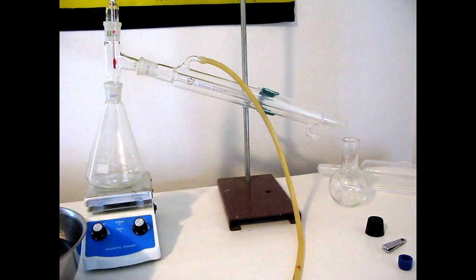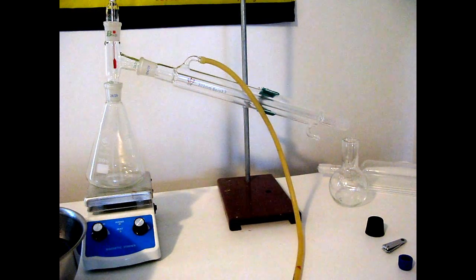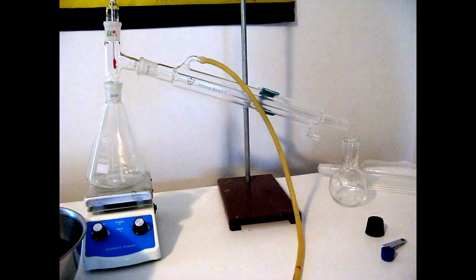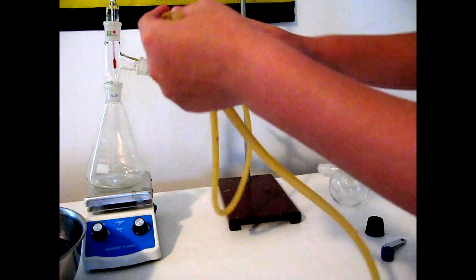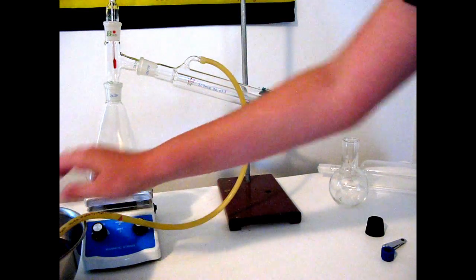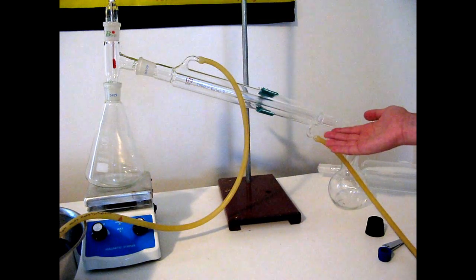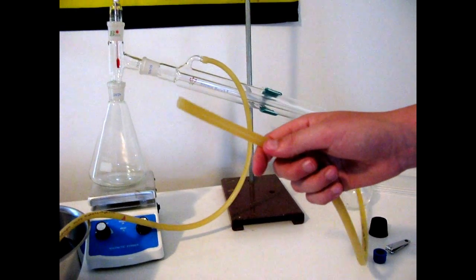Then you're going to want to set up some rubber tubing to have the water flow into your condenser. See, so first this top tube just will go into a bowl I have over there with a pump that I will show you later. Then this other tube you're going to want to set up.